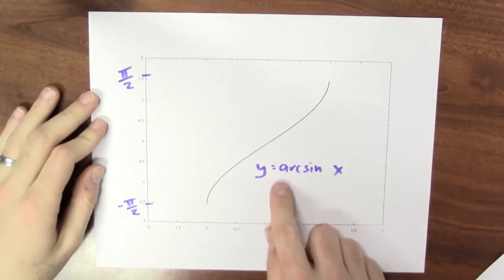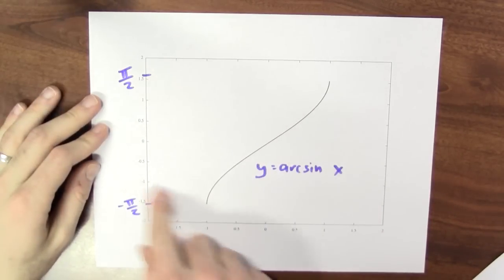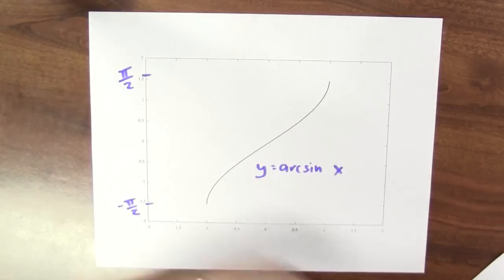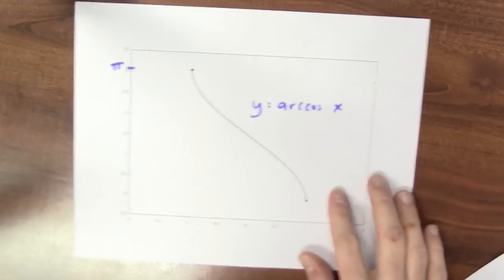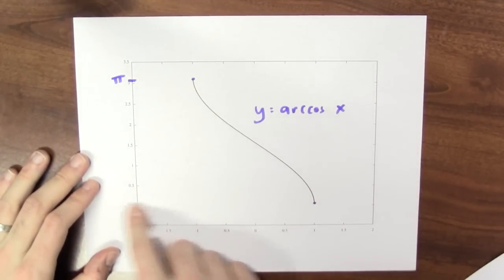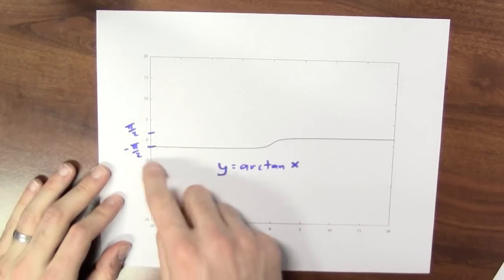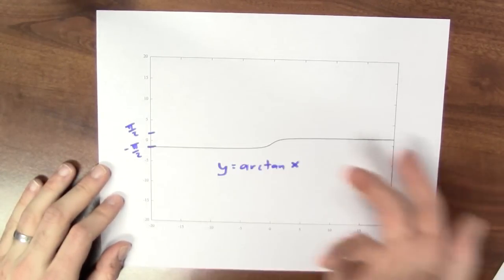By convention, arcsine outputs angles between minus π over 2 and π over 2. And also by convention, arccosine outputs angles between 0 and π. And arctan outputs angles between minus π over 2 and π over 2.